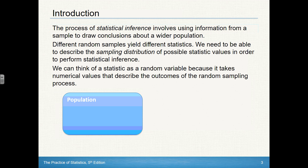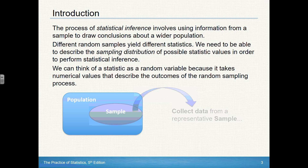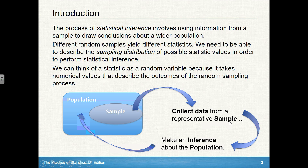When we talk about doing statistical inference, what we're trying to do is get information about a population from just a sample. We see the whole population, but we can't get all of that information from the population, so we take a sample. We collect the data, we hope it's representative, and then we make an inference about the population. It's this circular process to learn about the population.